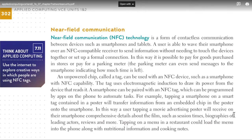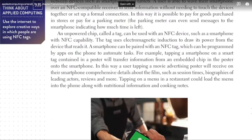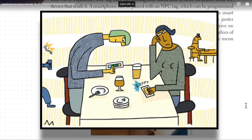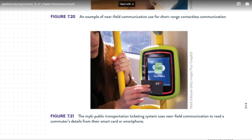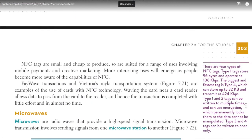In this way, a user tapping a movie poster will receive on their smartphone comprehensive details about the film such as session times, biographies of leading actors, reviews, and more. Tapping on a menu in a restaurant could load the menu into the phone along with nutritional information and cooking notes. NFC tags are small and cheap to produce, so are suited for a range of uses involving mobile payments and creative marketing. More interesting uses will emerge as people become more aware of the capabilities of NFC.